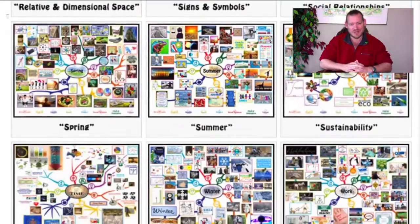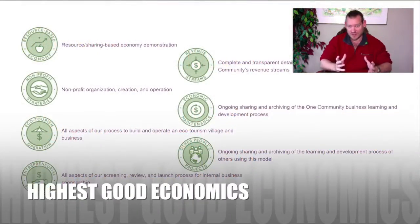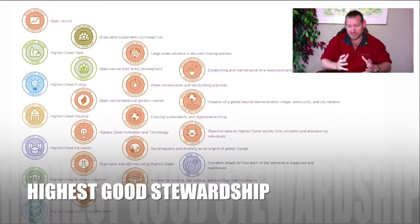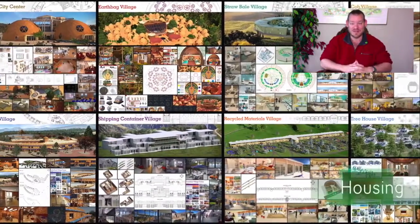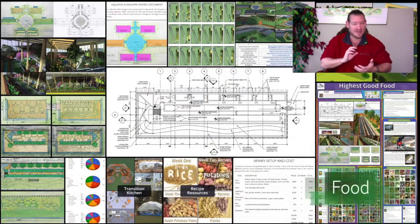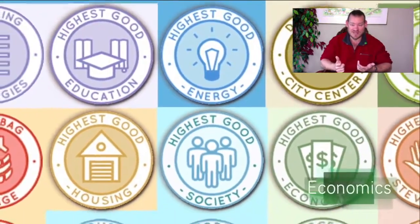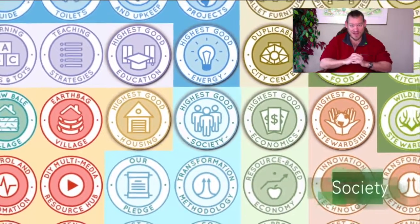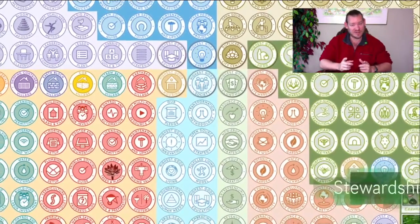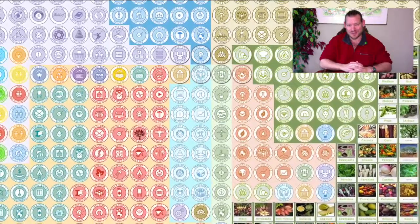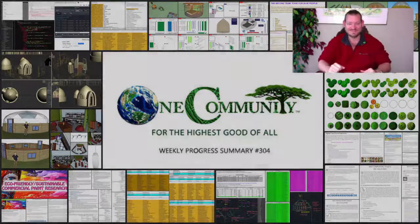So much food ends up in the garbage — we want to fix that, for ourselves and for other people. Open source community ecology models are one way to do that. We're creating the blueprints, tools, tutorials, and do-it-yourself instructions to build them. One Community is a place people can visit, experience, and then take any aspect of it to build their own self-replicating teacher demonstration community, village, city, or hub. This is what our all-volunteer, 100% unpaid non-profit team is creating.